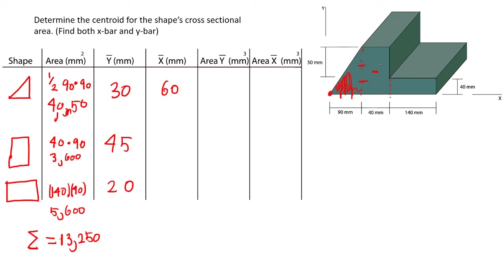And then for the next shape it's going to be 90 because we're going about the origin. So you want to add to the left, so 90 plus half of 40, which is 110. And then for our final shape, it's going to be half of 140 plus 90 plus 40 which yields 200.